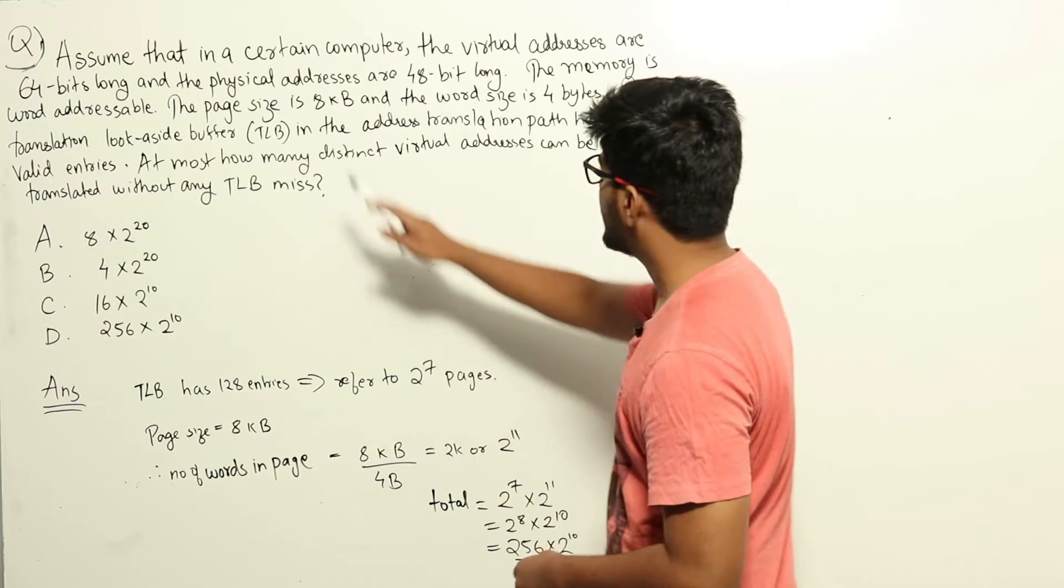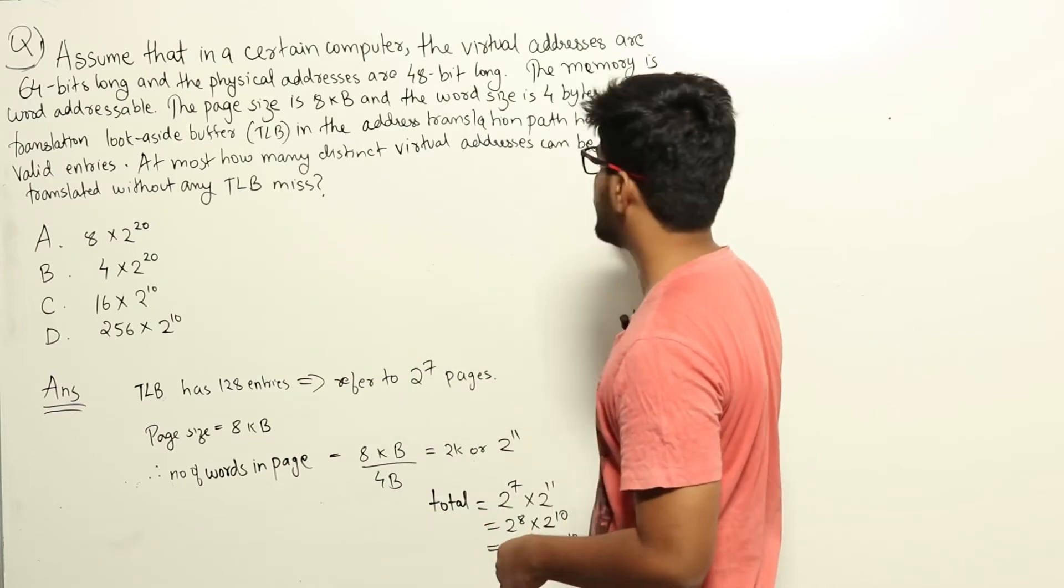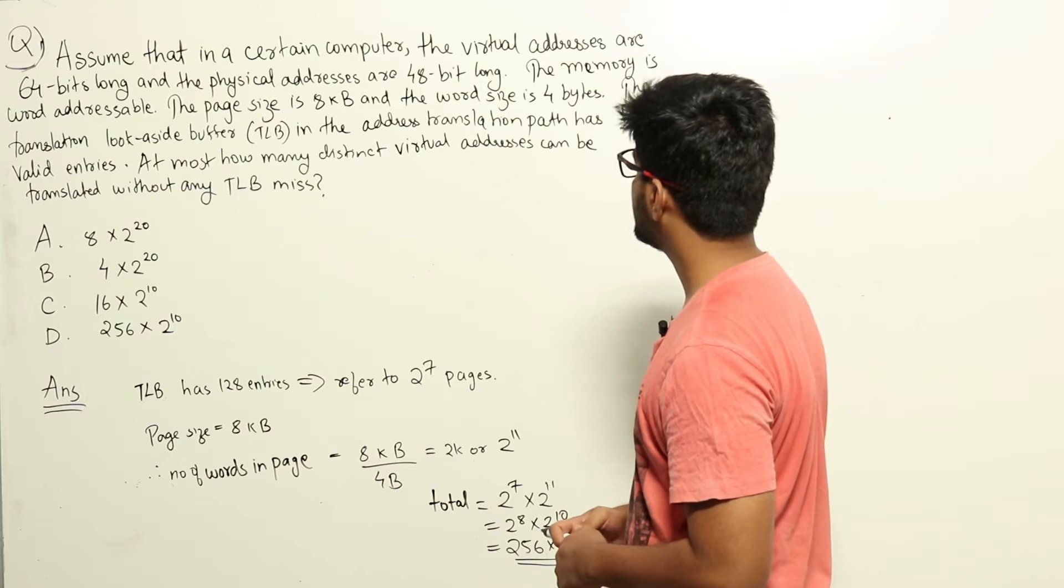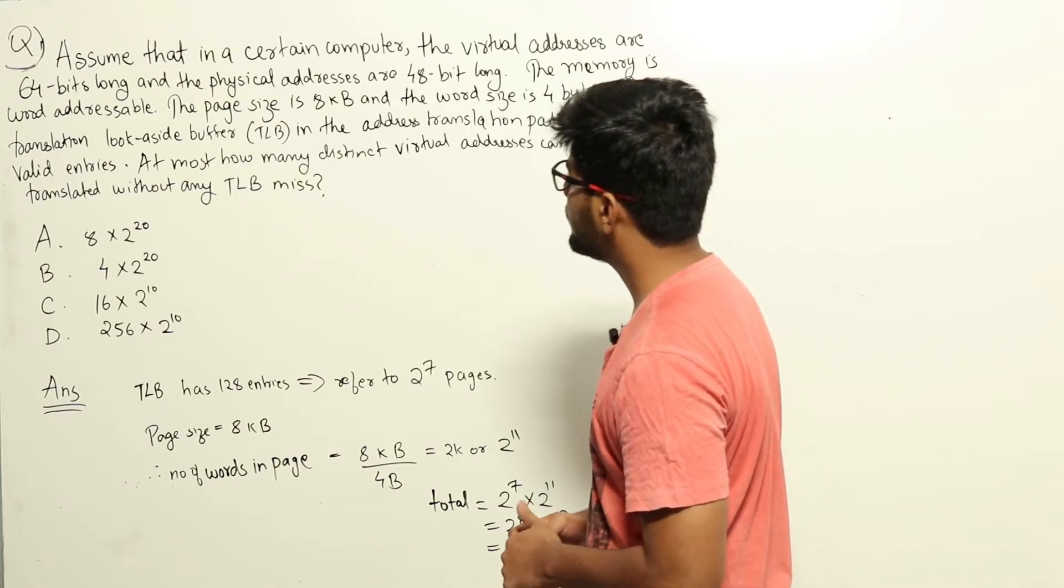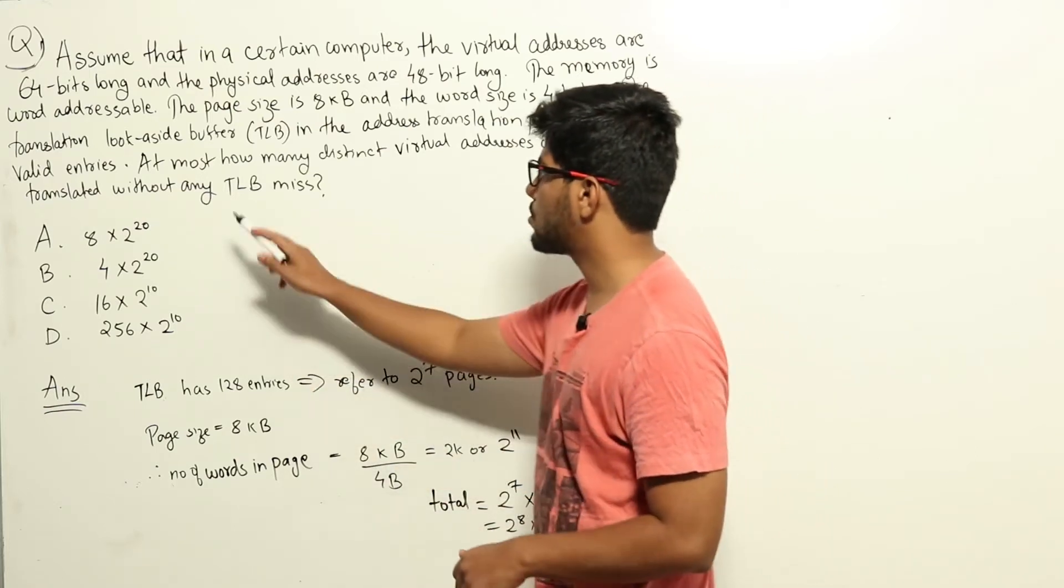The translation look-aside buffer TLB in the address translation path has 128 valid entries. At most how many distinct virtual addresses can be translated without any TLB miss? Four options are given here.